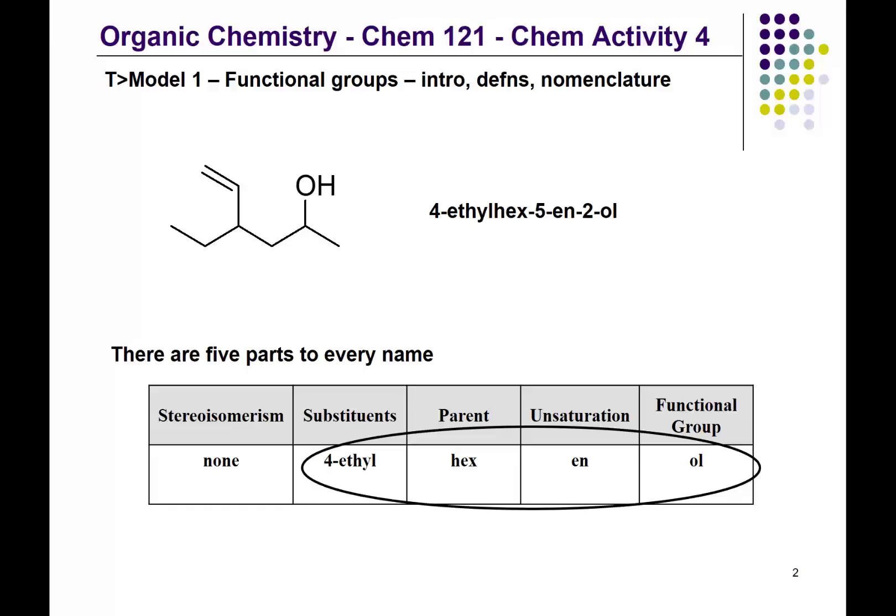For this particular chain, it will have been numbered from the right-hand side. It's a six-carbon chain where the functional group is on carbon number two, not carbon number five. We have an ethyl substituent on carbon number four, and unsaturation starting on carbon number five, and it's a six-carbon chain.